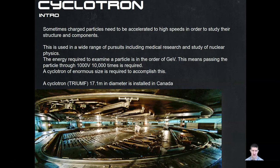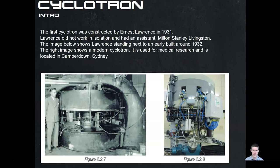To do this we need a cyclotron of enormous size to generate this electric field potential and have enough space to allow the particle to go around ten thousand times. The Triumph cyclotron in Canada is 17.1 meters in diameter — that's pretty big. The first ever cyclotron was invented by Ernest Lawrence in 1931. He had an assistant, Milton Stanley Livingston. An image shows Lawrence standing next to an early model around 1932. A modern cyclotron is located in Sydney, and when you think about it, we've had this technology since back in 1931.